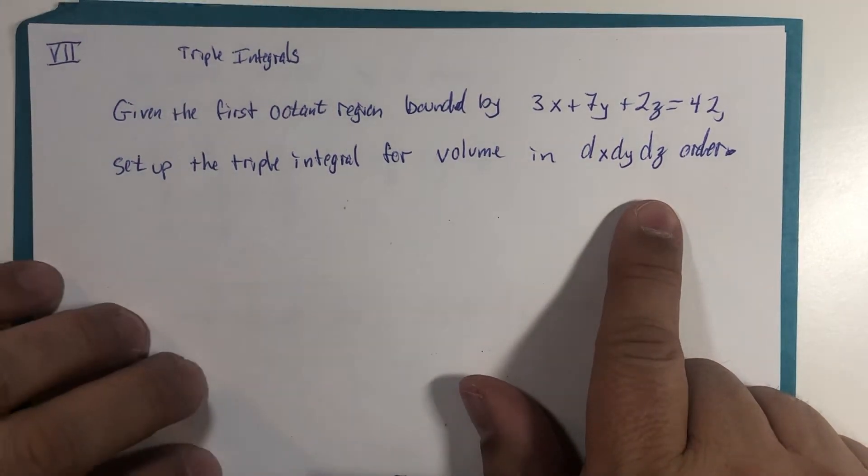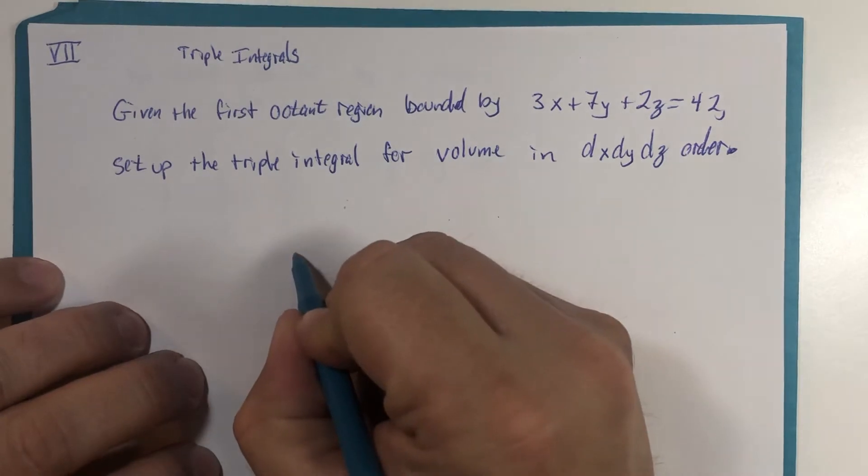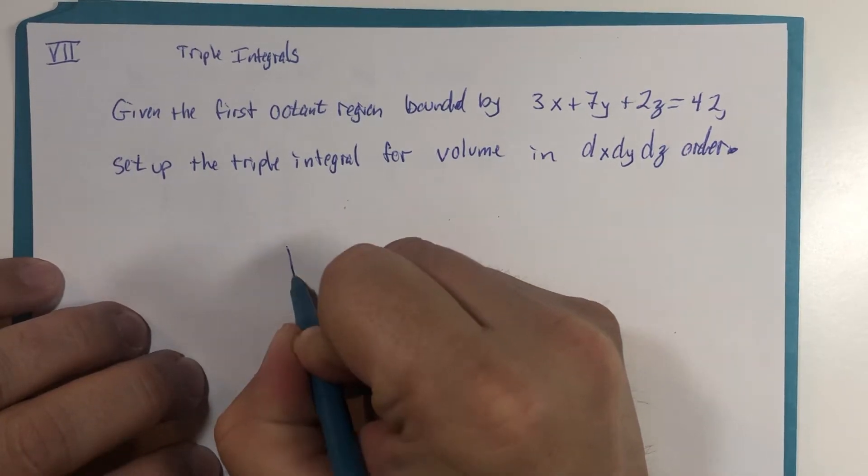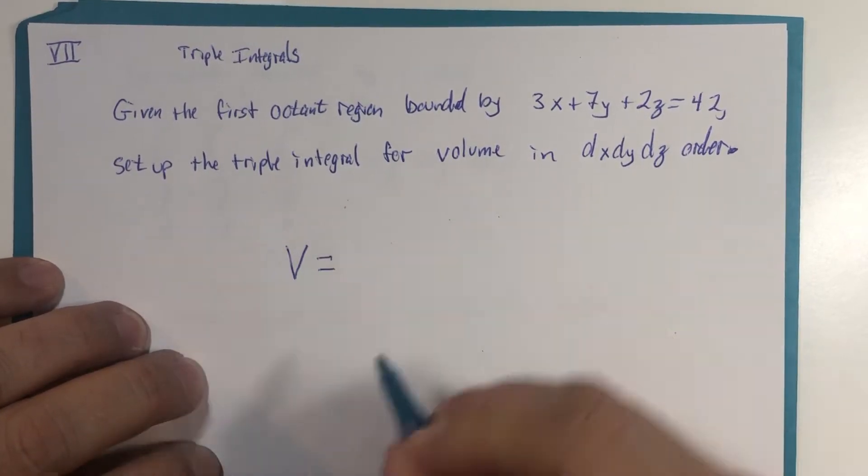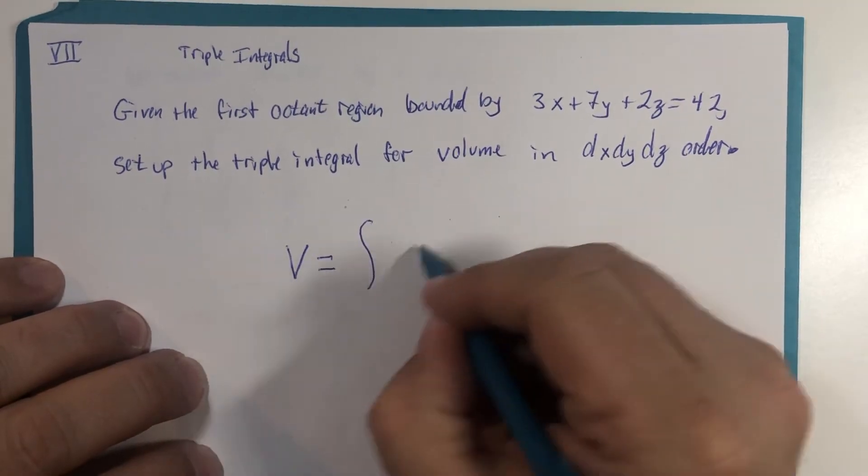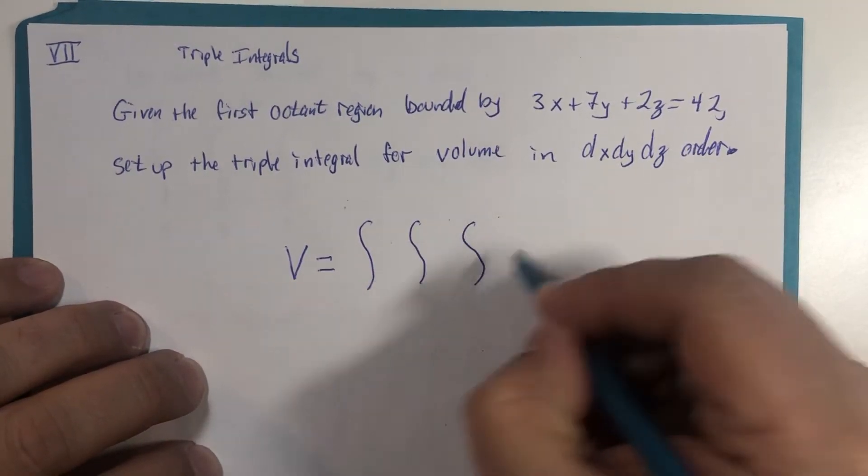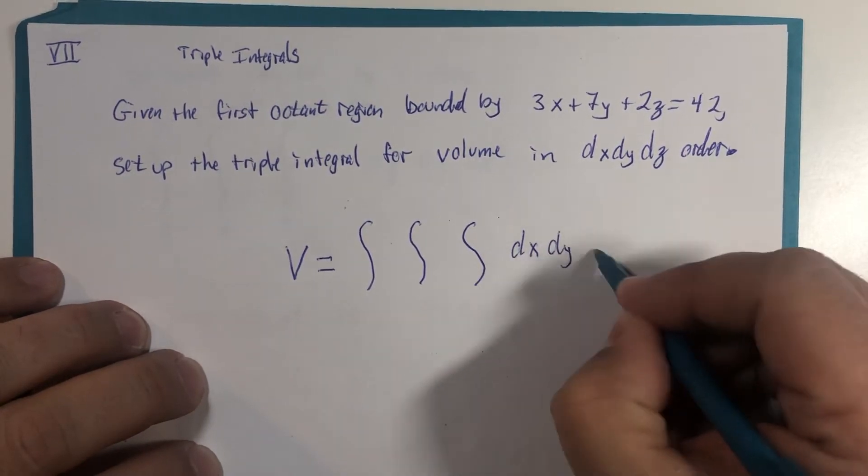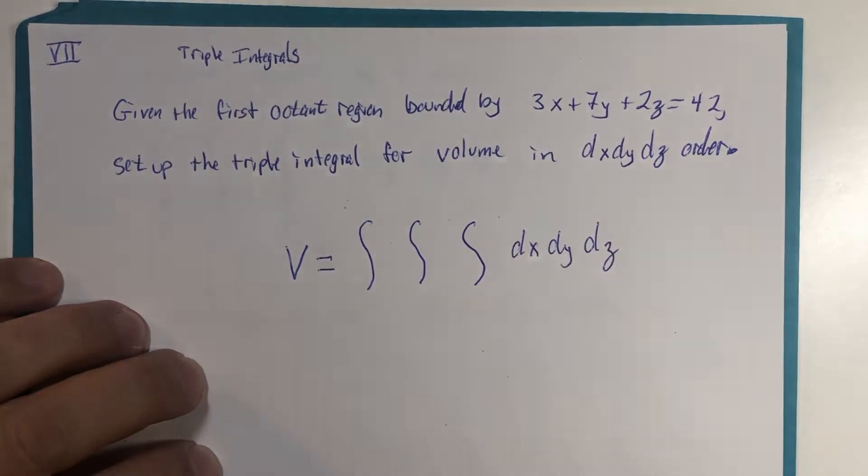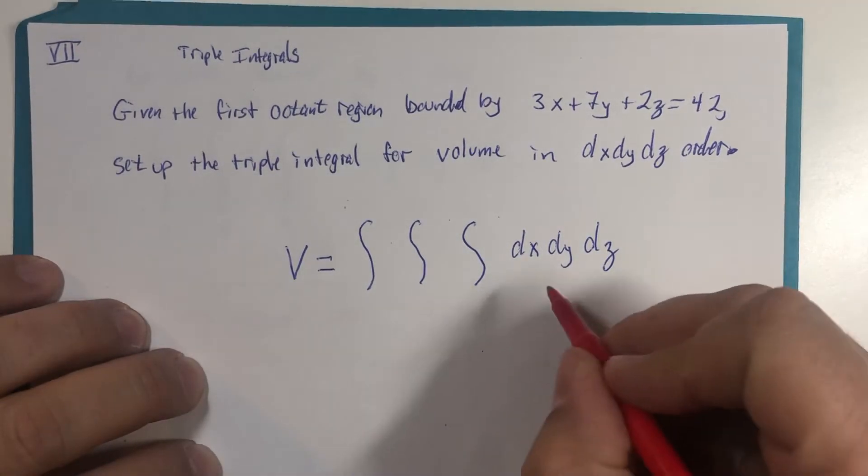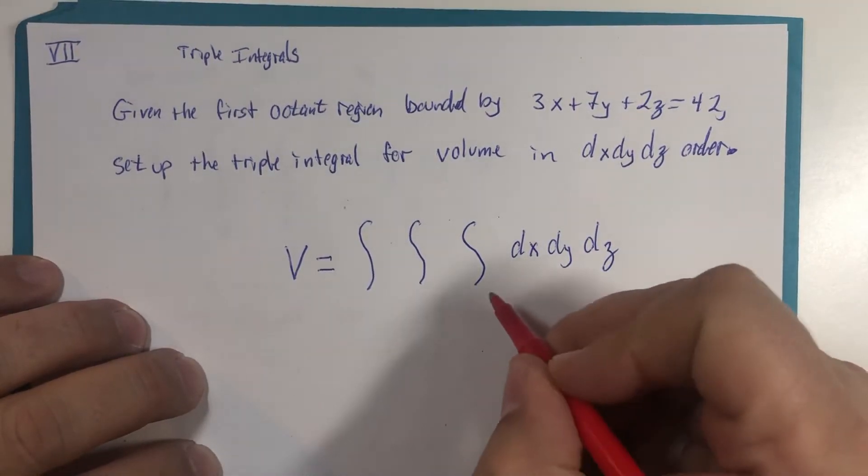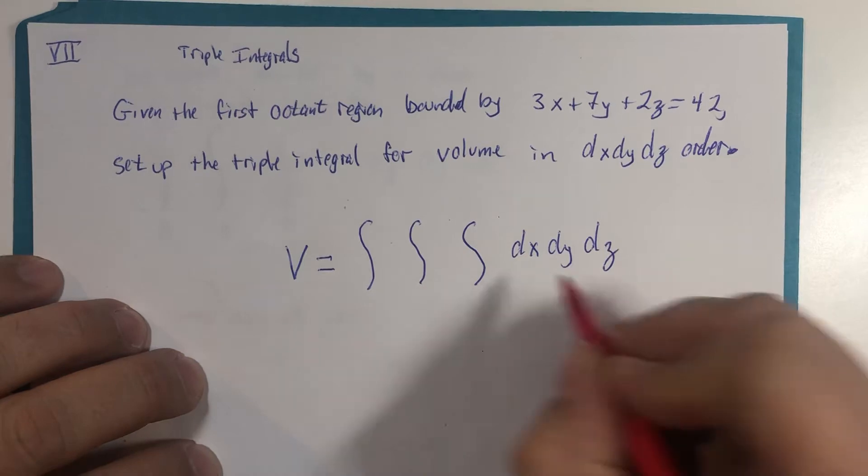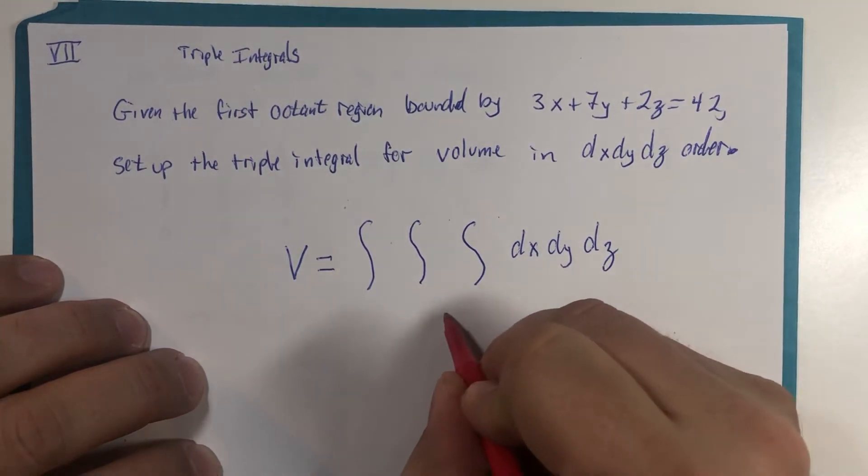So our objective is to set up volume equals triple integral dx dy dz. That is our objective. I cannot stress this enough, adding extra labels for material that we're learning in non-traditional means, but also three dimensions is difficult. Label things.